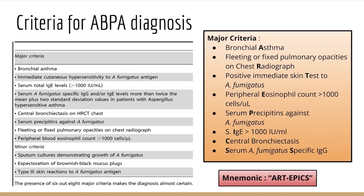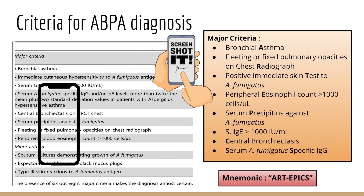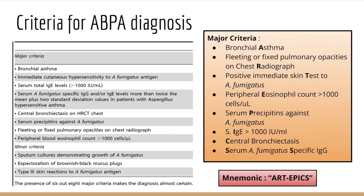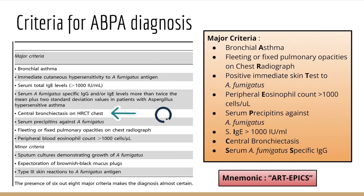The criteria for ABPA diagnosis are the most important part. There are major and minor criteria. Major criteria include: bronchial asthma, immediate cutaneous hypersensitivity to Aspergillus fumigatus, serum total IgE levels more than 1000, specific IgG antibody for Aspergillus fumigatus, central bronchiectasis pattern on CT chest, serum precipitants against A. fumigatus, fleeting or fixed pulmonary opacities on chest radiograph, and peripheral blood eosinophil count more than 1000. Six out of eight major criteria makes the diagnosis almost certain.